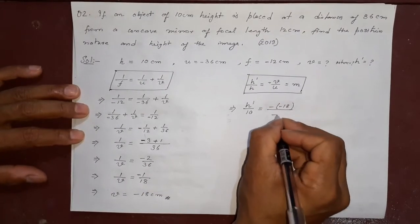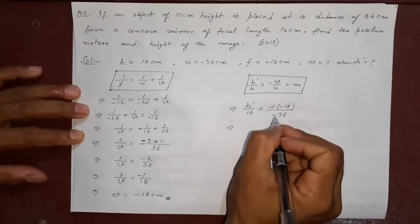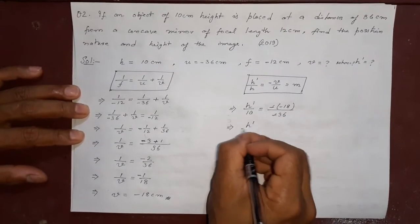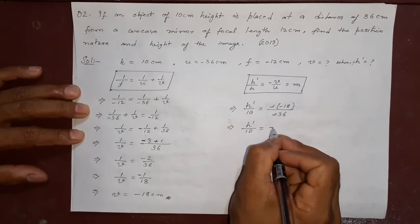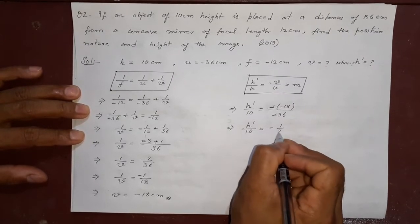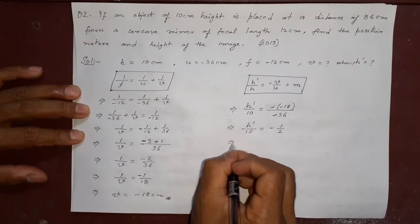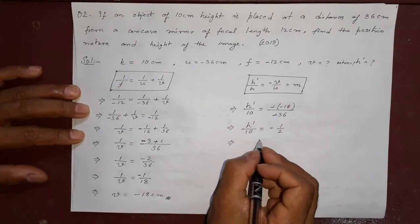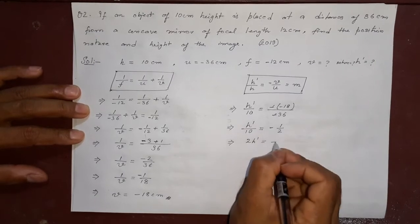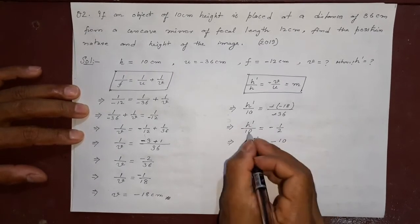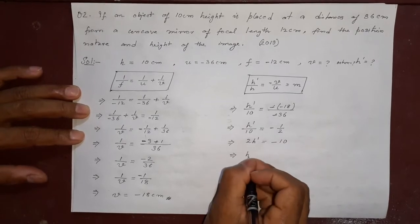Cancel these two, then equal to 18 and 36. If you cancel what will? 18 twos are 36. Now cross multiply. 2 h dash equal to minus 10. 10 ones are 10. Minus plus a minus, h dash equal to minus 10 by 2.